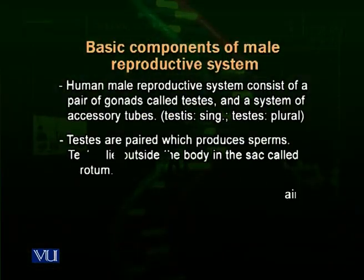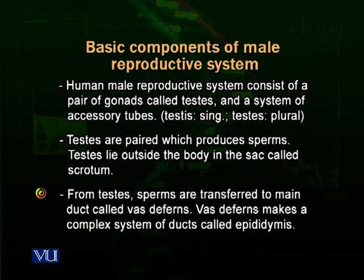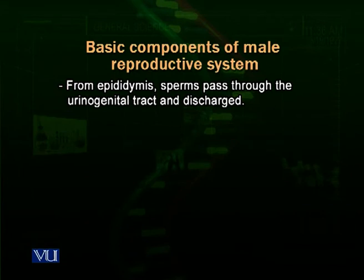Testis lie outside the body in a sac called the scrotum because spermatogenesis is highly sensitive to temperature, so testis are located outside where the temperature is lower. From the testis, sperms are transferred to the main duct called the vas deferens. The vas deferens makes a complex system of ducts on the surface of the testis called the epididymis.